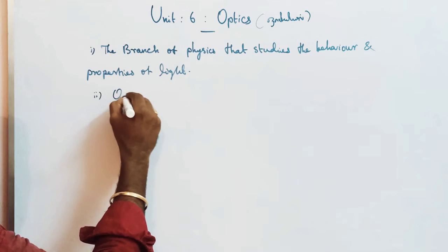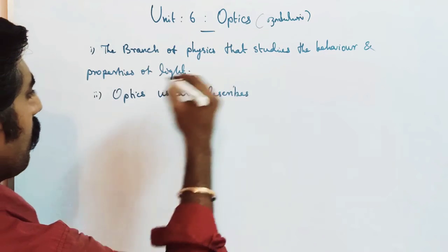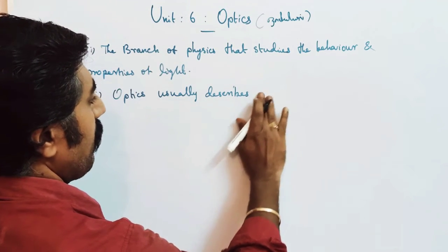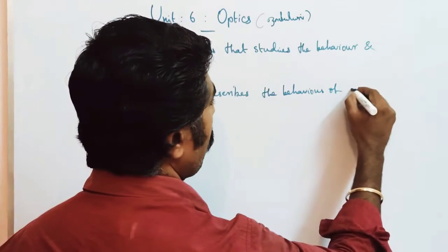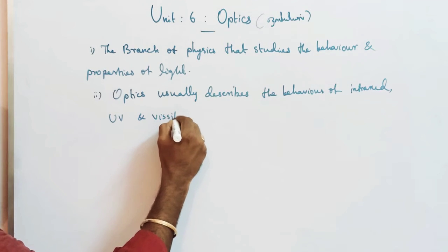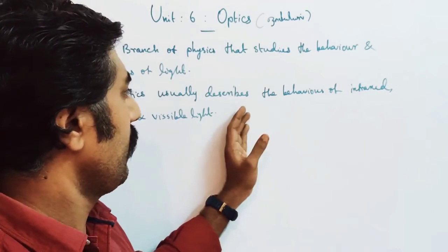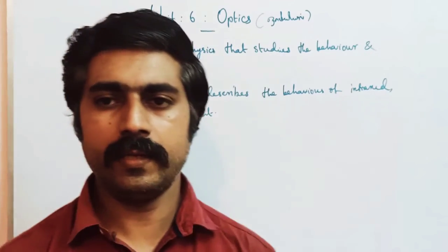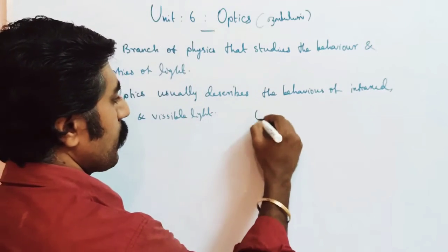Second point: Optics usually describes the behavior of infrared, then ultraviolet light, and visible light.